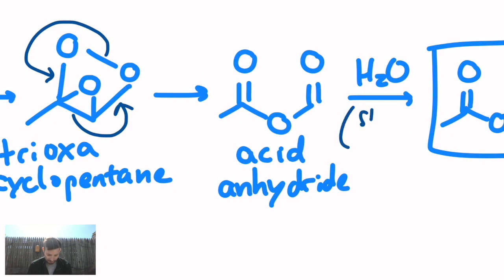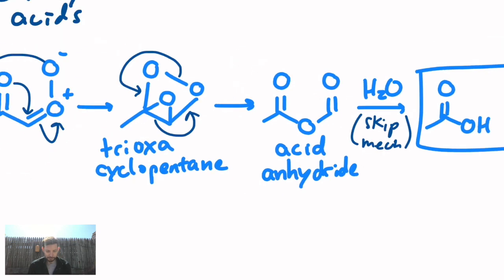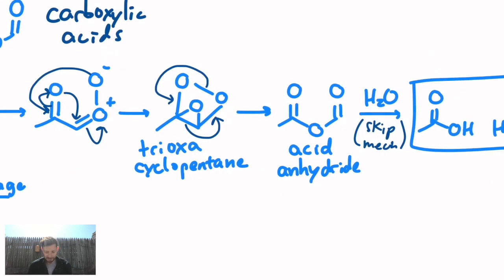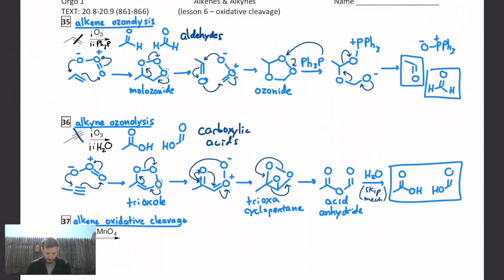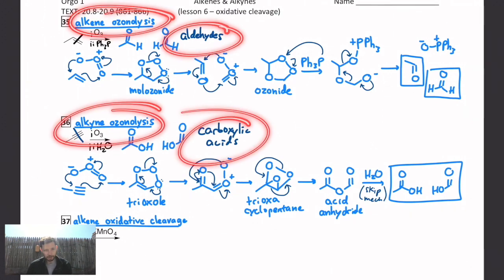This last part, we're going to skip the mechanism of. It's actually not that bad, but it's related to carboxylic acid derivatives, and that's more of an Orgo 2 topic. Okay, so alkene ozonolysis gives you aldehydes. Alkyne ozonolysis gives you carboxylic acids.